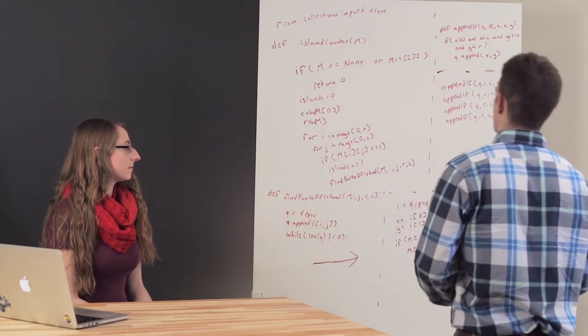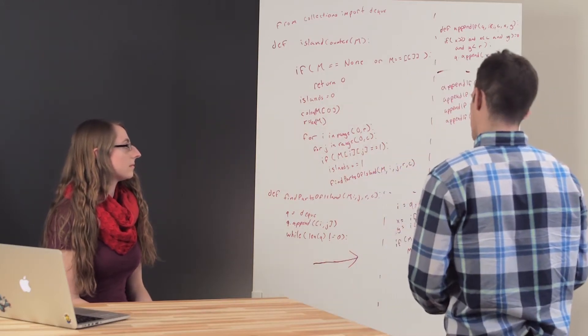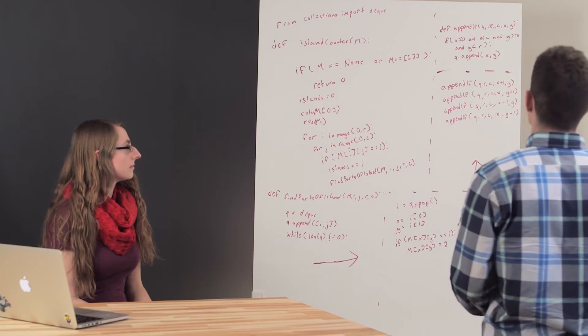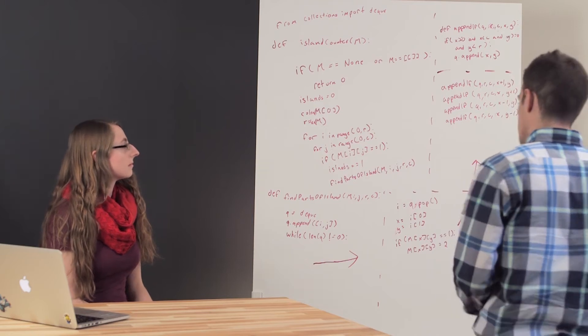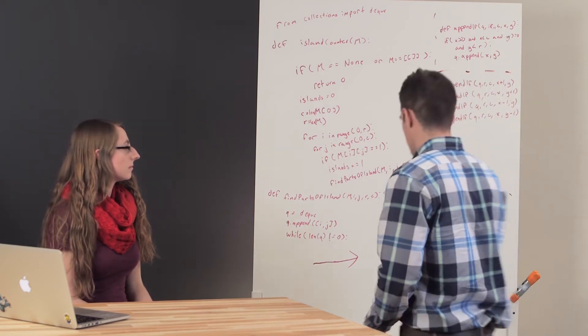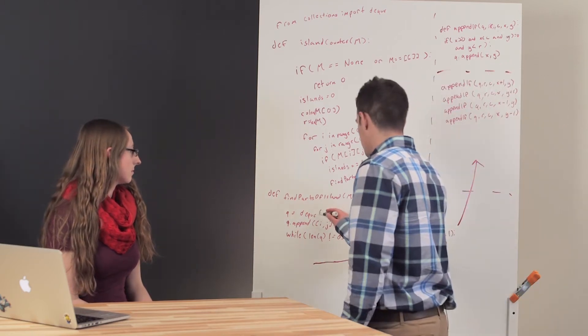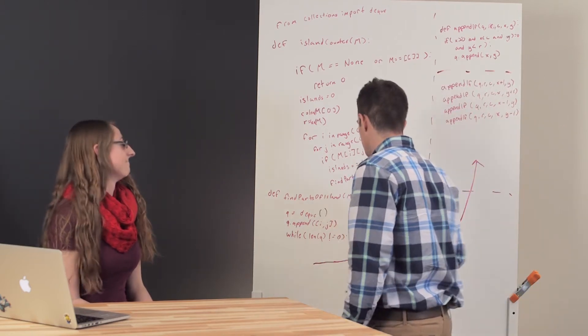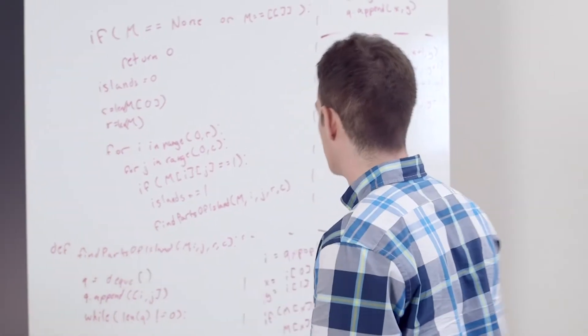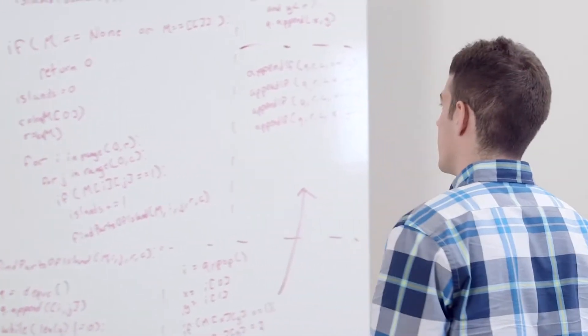I'm looking here to see if I have any errors. It looks like I forgot braces here for dq, so I'm calling that method correctly now.